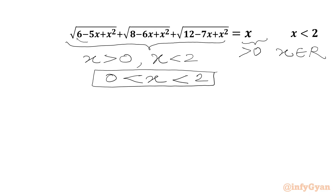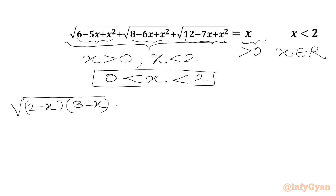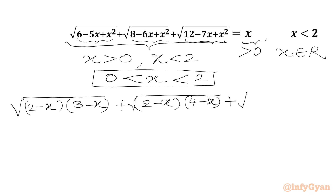Now we have to factorize the radicands, so we want to write them in factor form. 5 is 2 plus 3 and 6 is 2 times 3, so we can write (2 − x)(3 − x). Similarly, 6 is 2 plus 4 and 8 is 2 times 4, giving √((2 − x)(4 − x)). Then 3 plus 4 is 7 and 3 times 4 is 12, so we factor (3 − x)(4 − x).